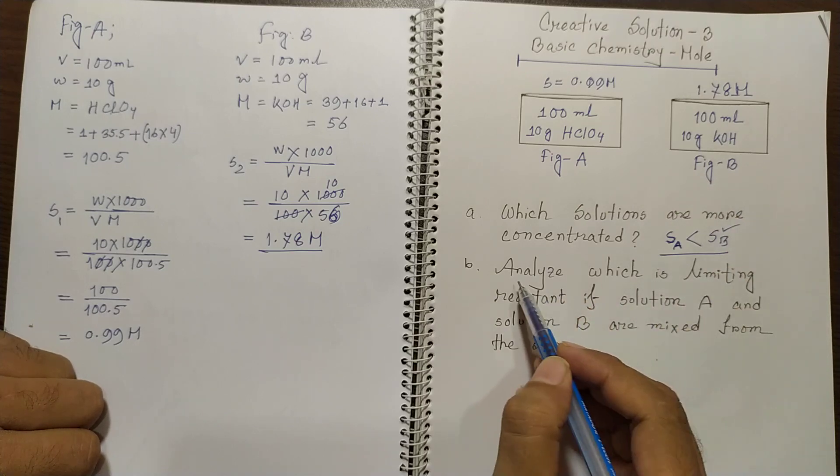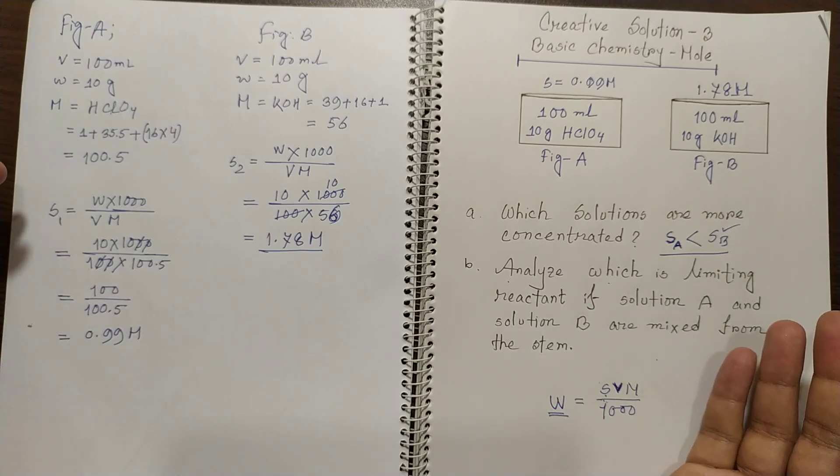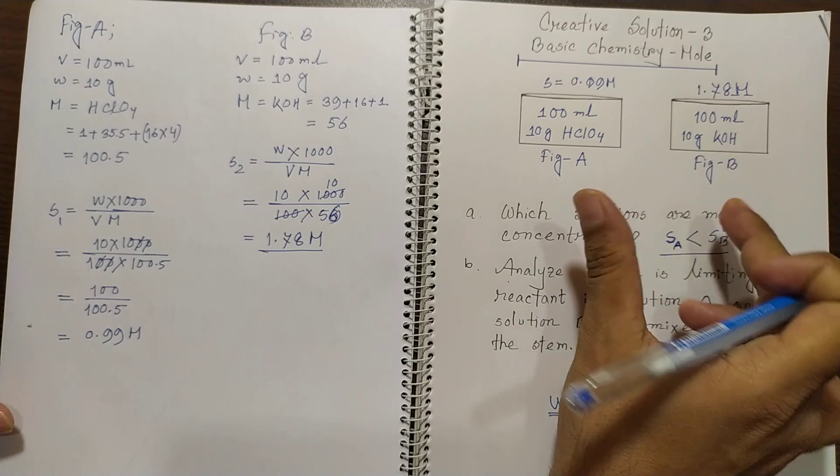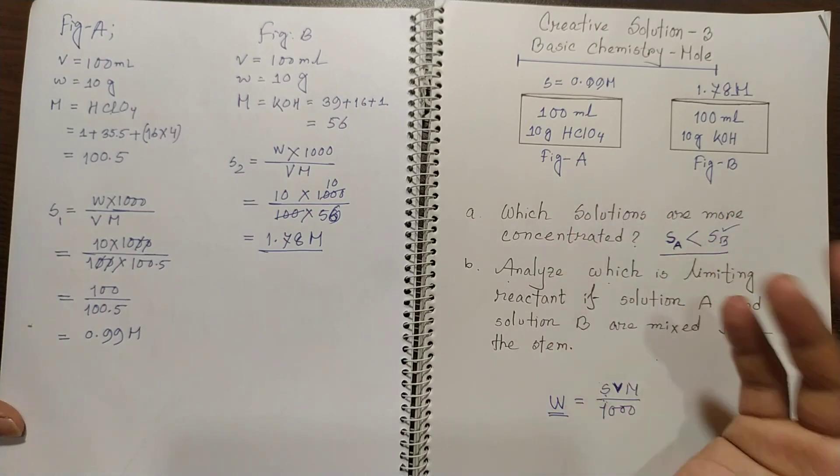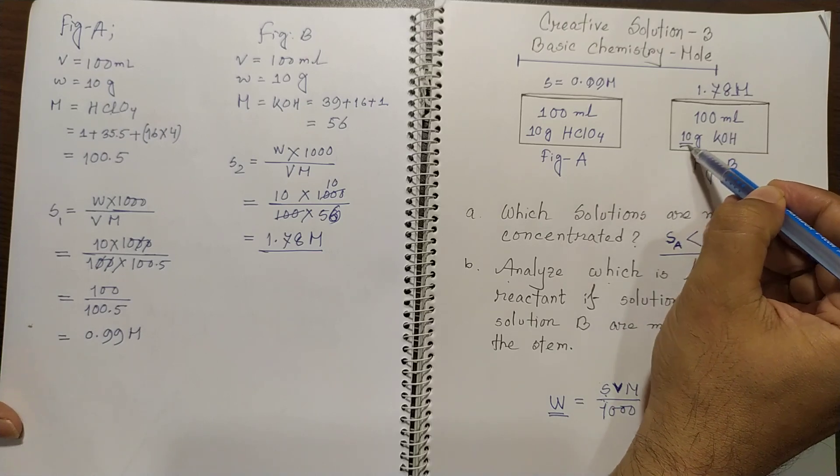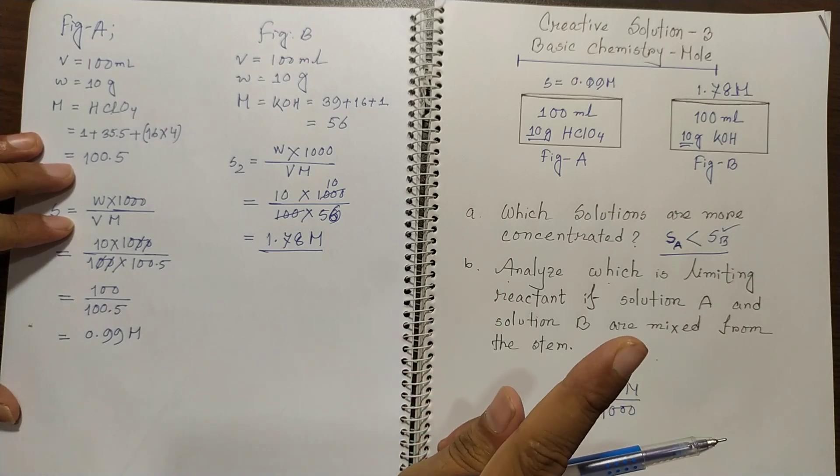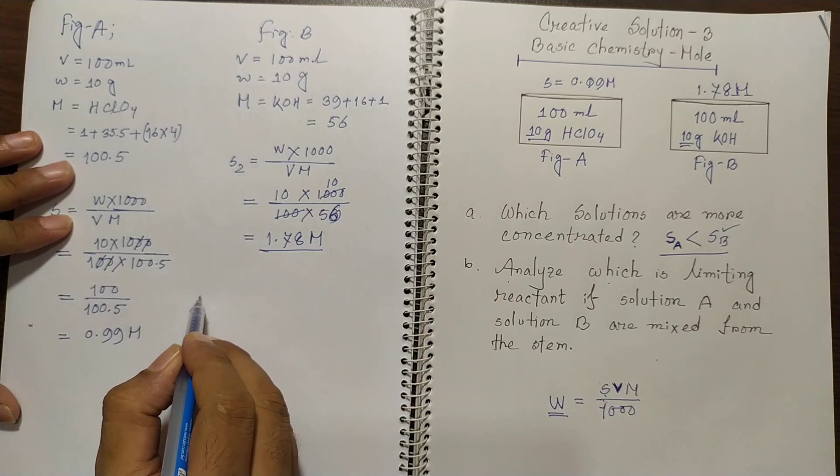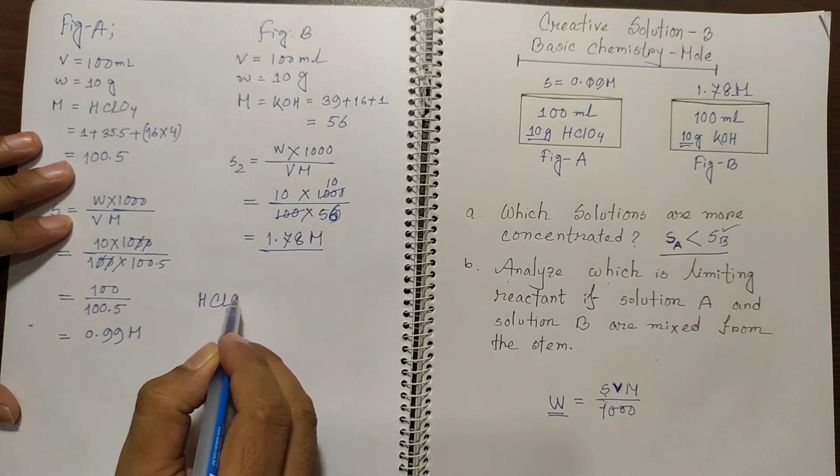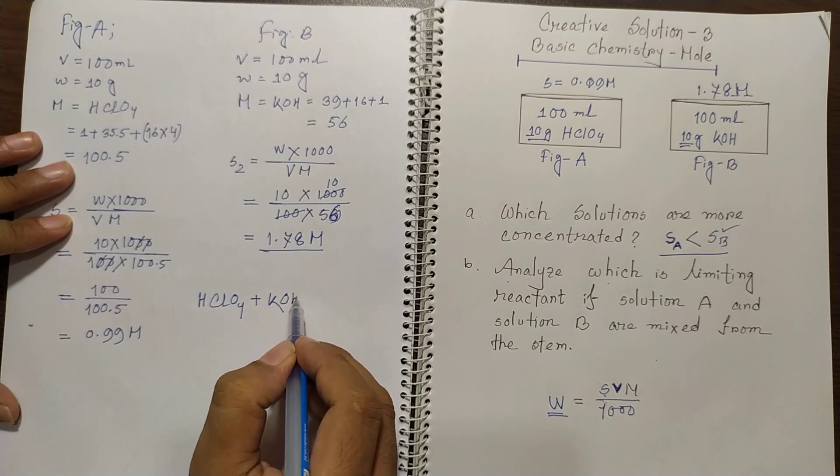And the next question is analyze which is limiting reactant. And this is a very common question. When you know something like that to find out the limiting reactant you must think the mass is given. And you must know that reaction should be done accordingly.